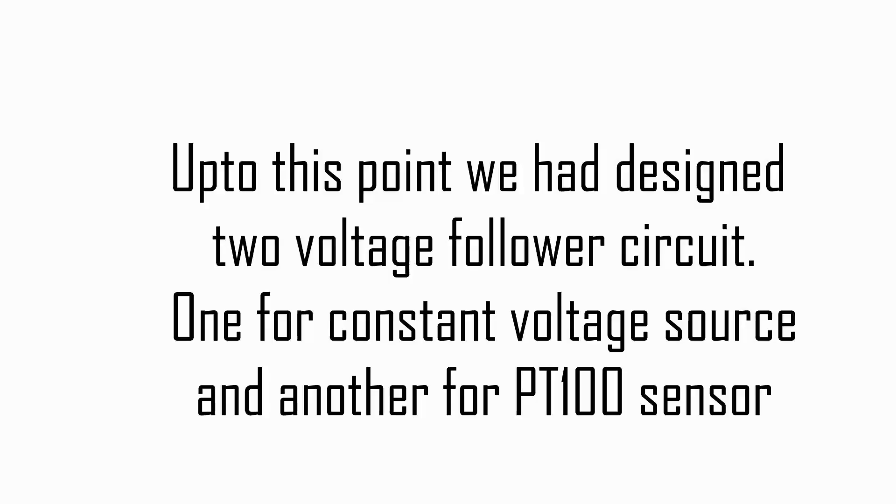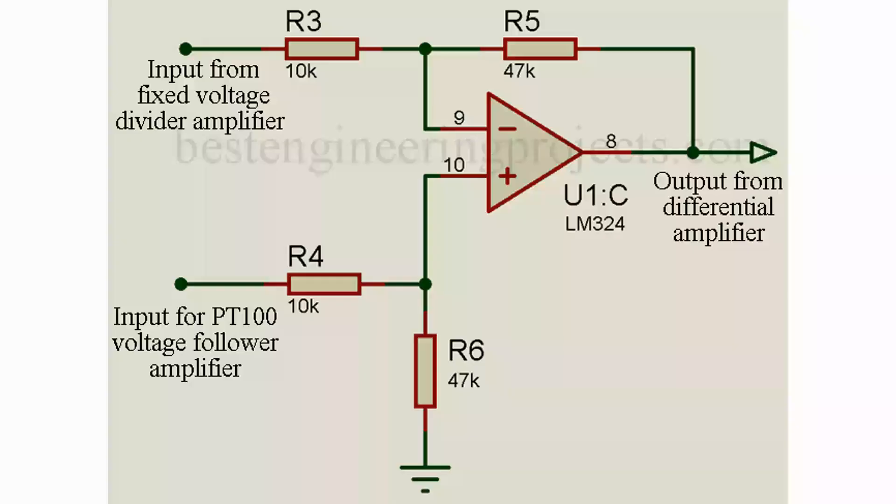Up to here, we have designed two voltage follower amplifiers: one for fixed voltage source and another for PT100 temperature sensor. Now a differential amplifier has two input terminals that are both isolated from ground by the same impedance. The differential amplifier amplifies only the difference in voltage at two input terminals: inverting and non-inverting pin. The output of PT100 temperature sensor is given to non-inverting terminal, where output of fixed voltage source is given to inverting terminal. While designing the differential amplifier, we have to calculate gain, that is, up to what output voltage we have to amplify.